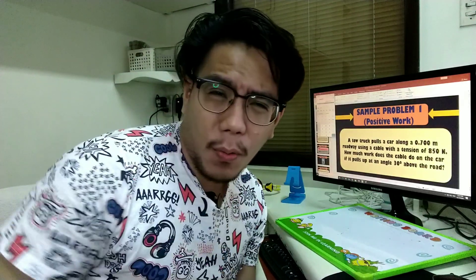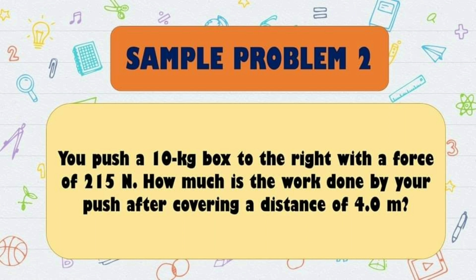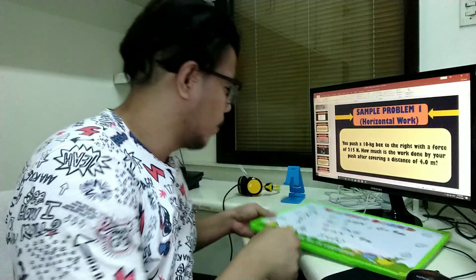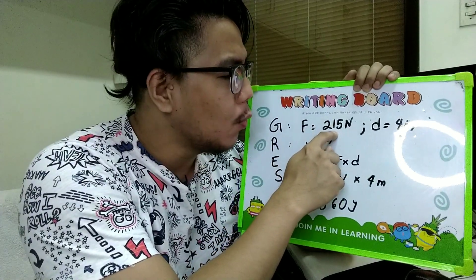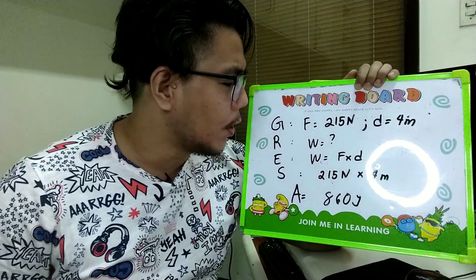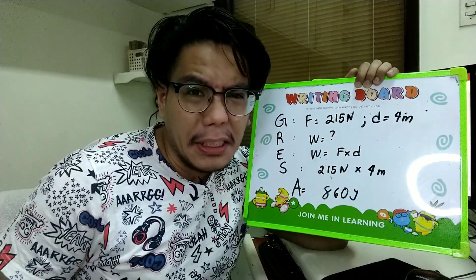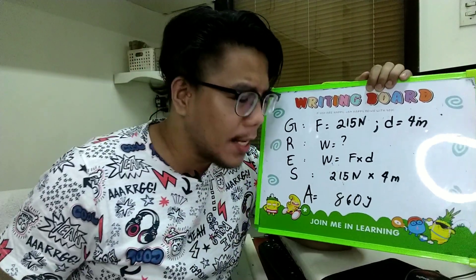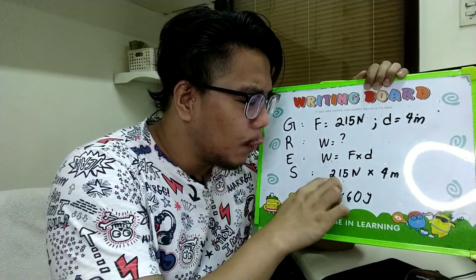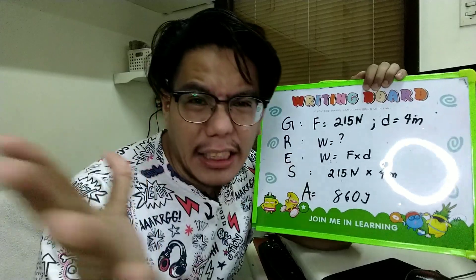Kung nasagotan mo ng tama yung una, basic na lang itong susunod sa'yo. Example number 2. It's time to check now. Given: force is equals to 215 newtons, displacement is equals to 4 meters. Required: work is missing. Equation: work is equals to force times displacement. Solution: 215 newtons times 4 meters. The answer is 860 joules.